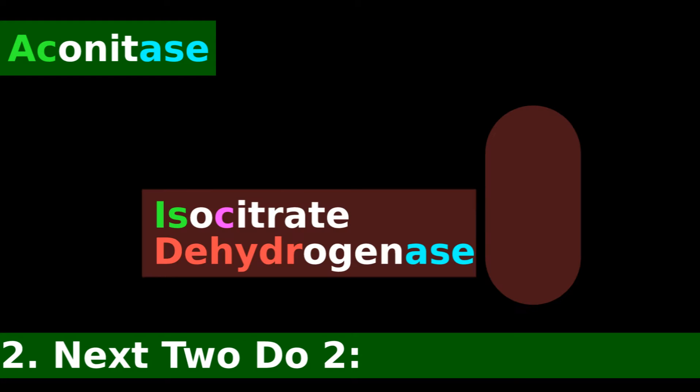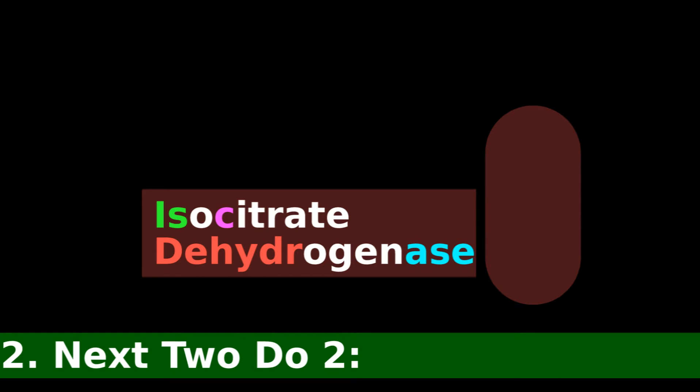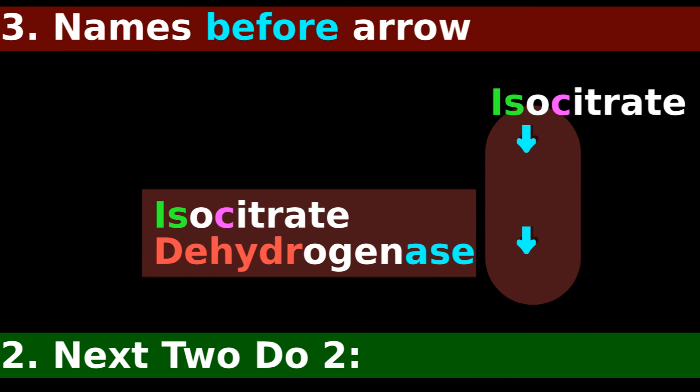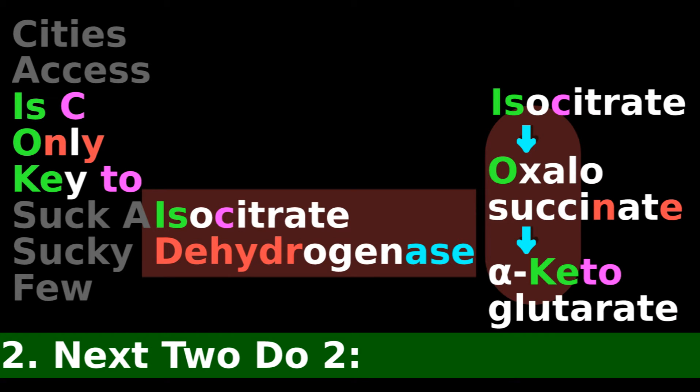Next, isocitrate dehydrogenase is the second enzyme that does two steps. Like the remainder of the enzymes, isocitrate dehydrogenase is named after the first thing before its arrow, isocitrate.